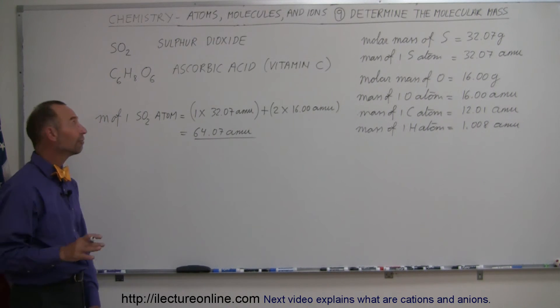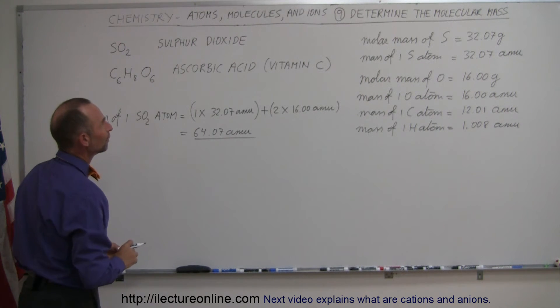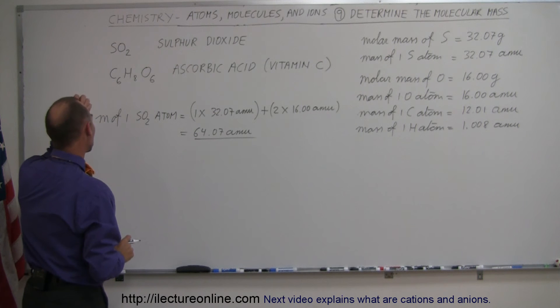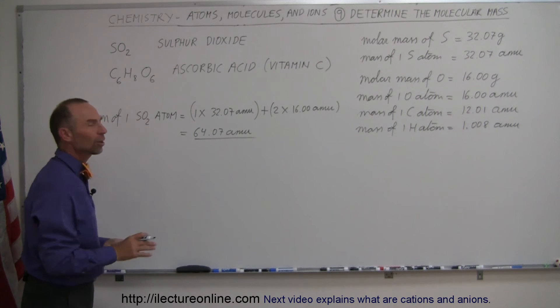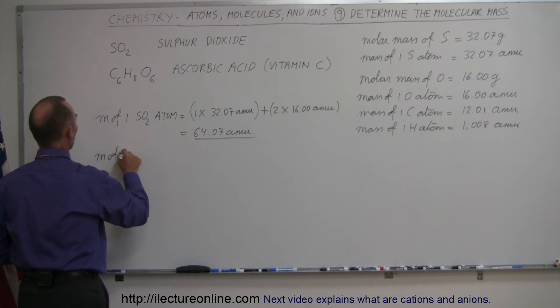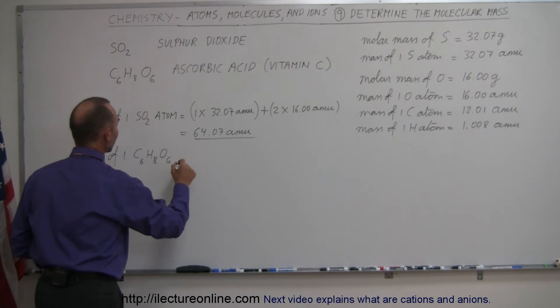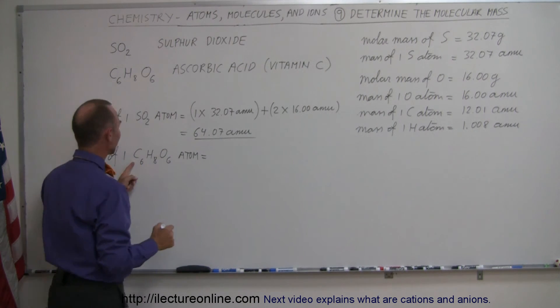And doing the same thing for our ascorbic acid atom, remember that's vitamin C in our previous video, but it's actually called ascorbic acid. It's one of the components in vitamin C. And so here, the mass of one C6H8O6 atom is equal to, well we have 6 carbons,